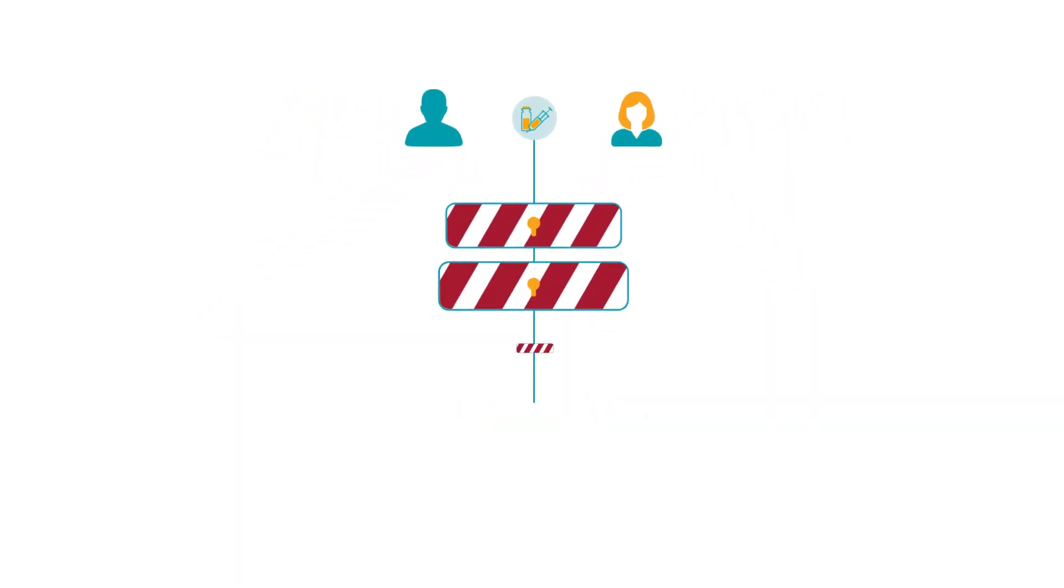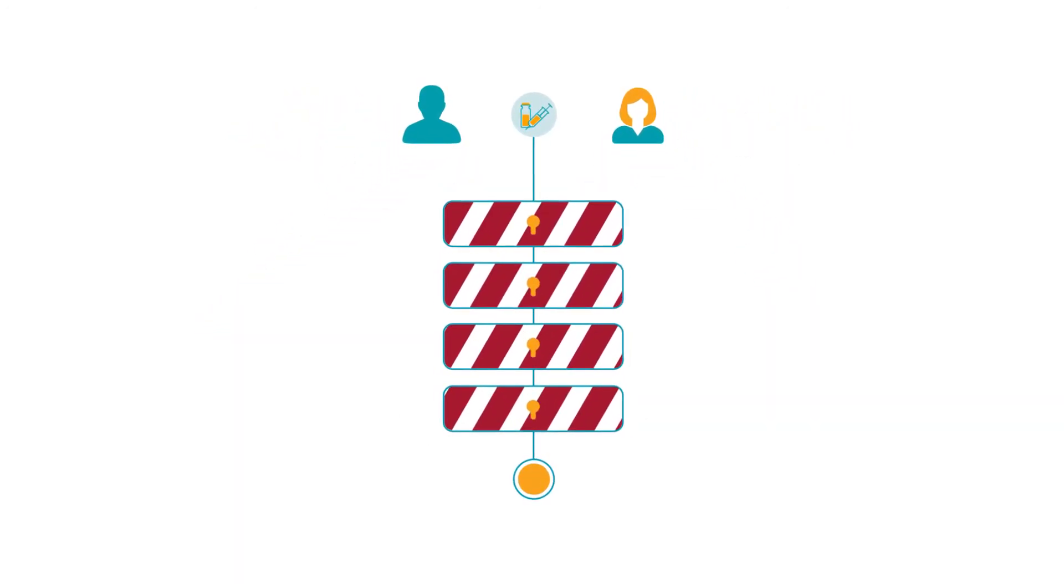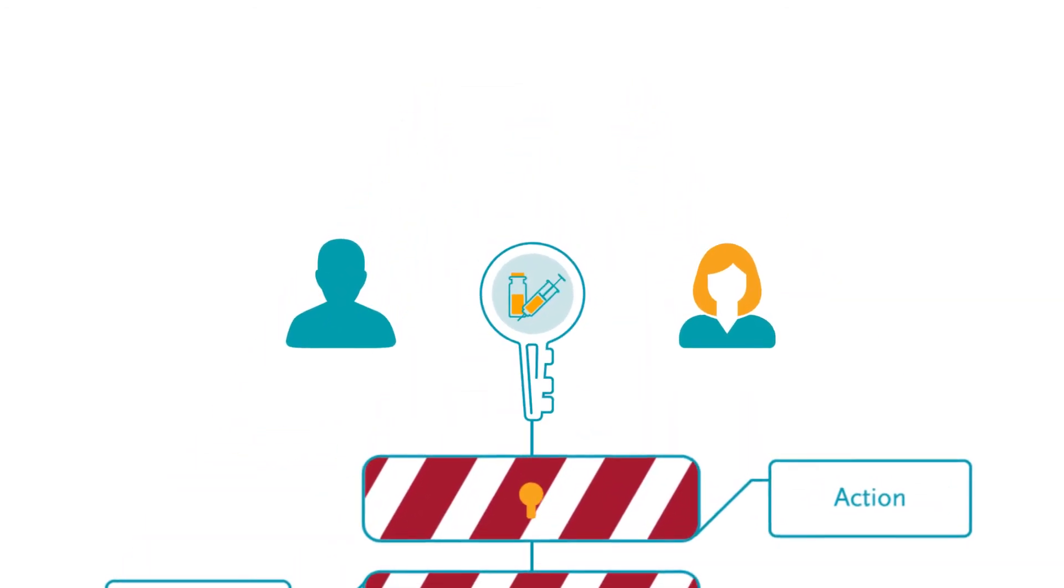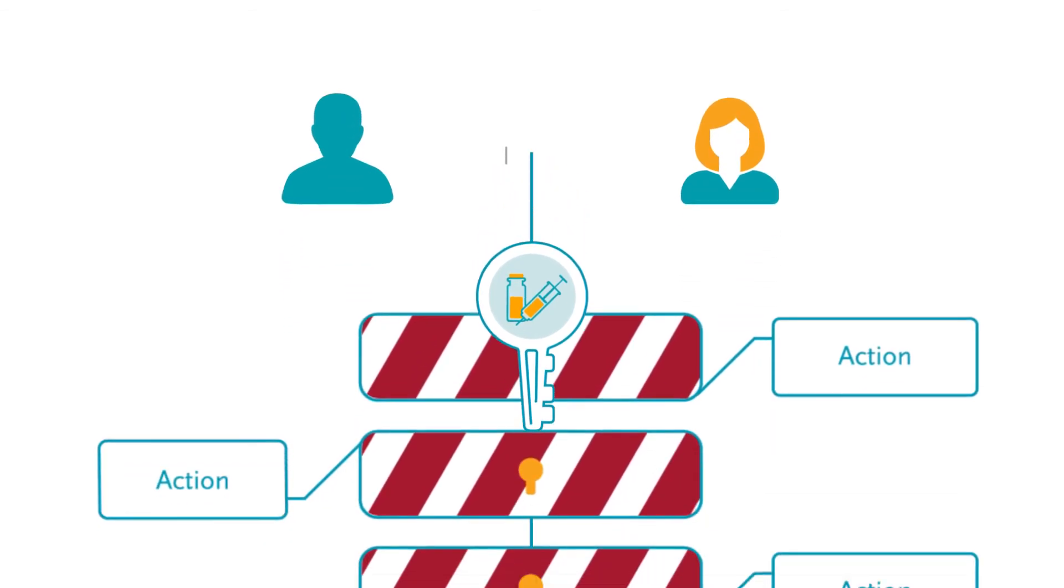It lists the major barriers to developing new tuberculosis vaccines, along with the specific actions to overcome these barriers, providing stakeholders with key priorities for tuberculosis vaccine development.